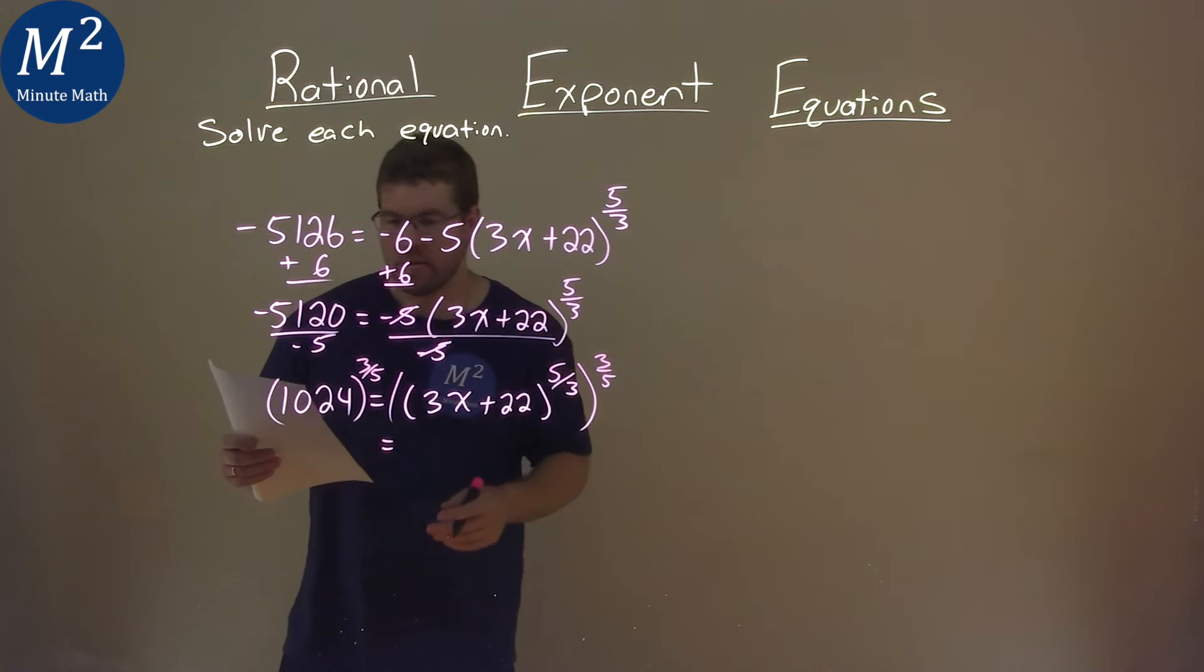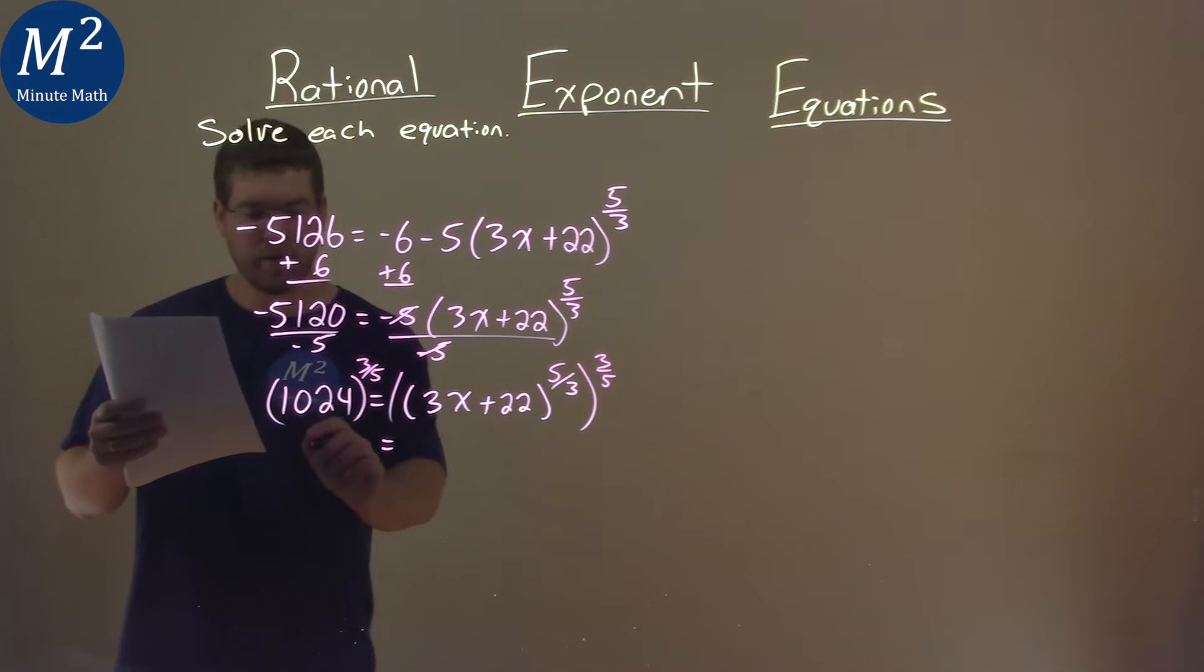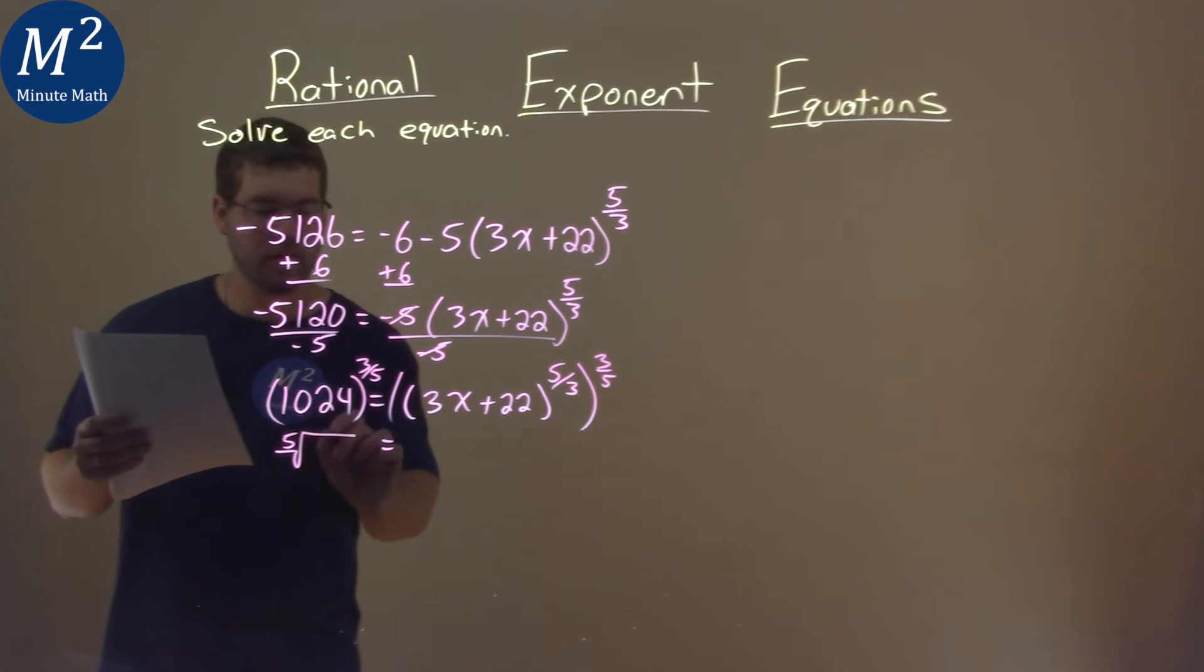So the left-hand side: 1,024 to the 3/5 power is the same as the fifth root of 1,024, all to the third power.